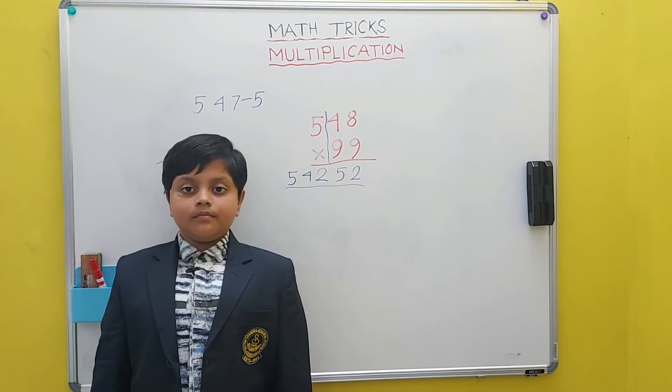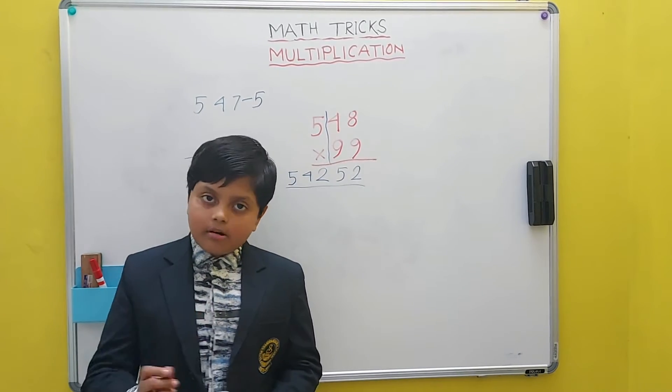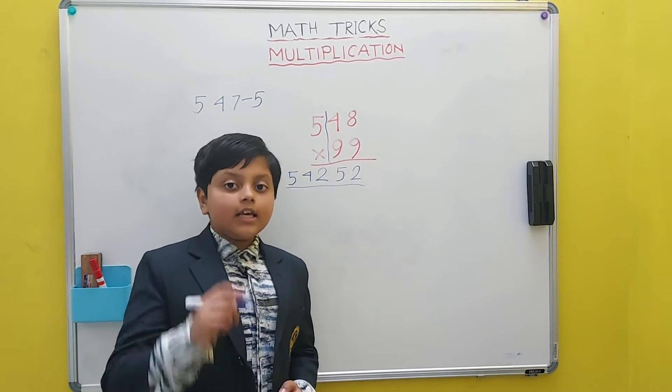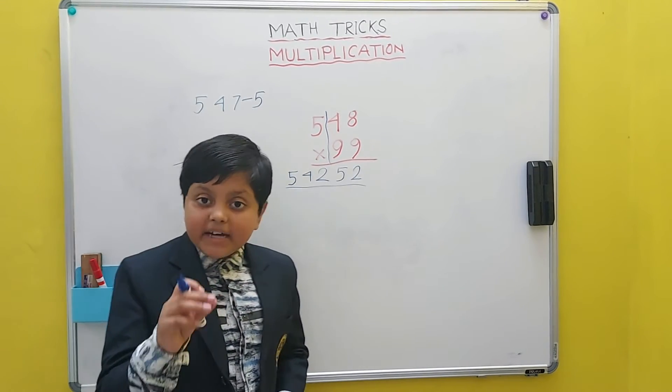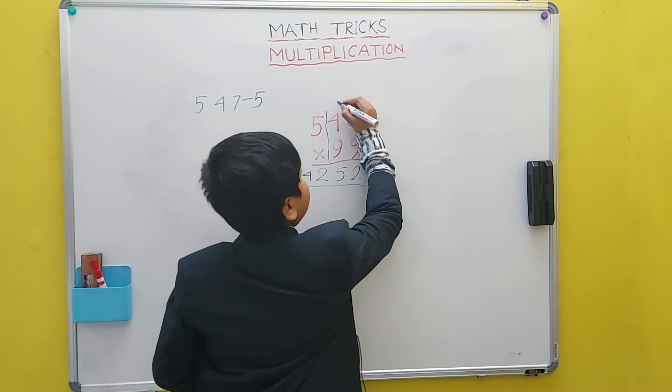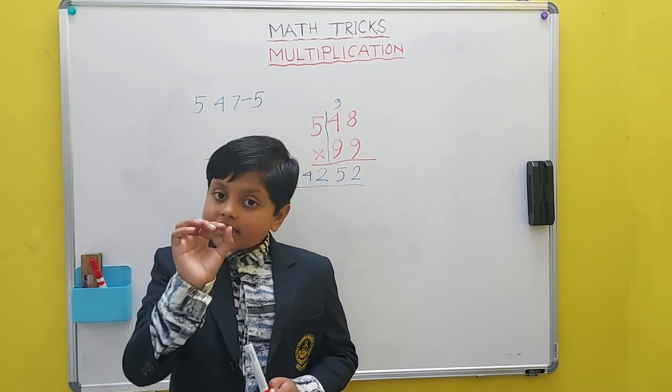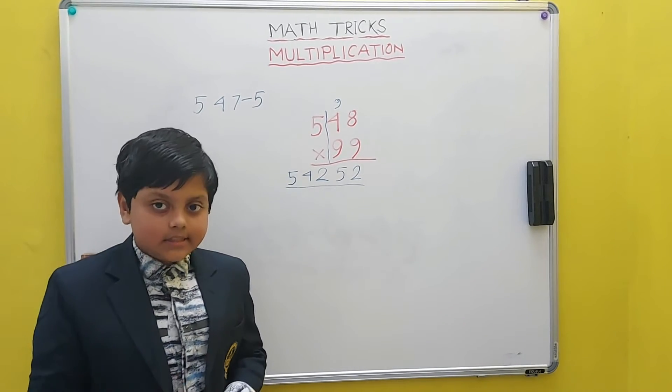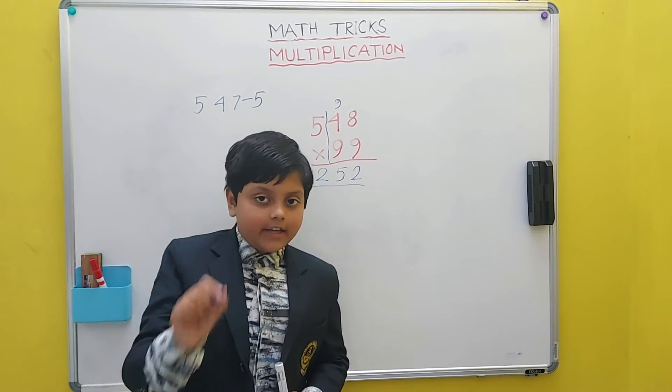What is all from 9, last from 10? Firstly, we have to take any number that is not the last number which in this case is 4. We will subtract 4 from 9 as the all from 9 part says. So, 9 minus 4 equals 5 that is right here.